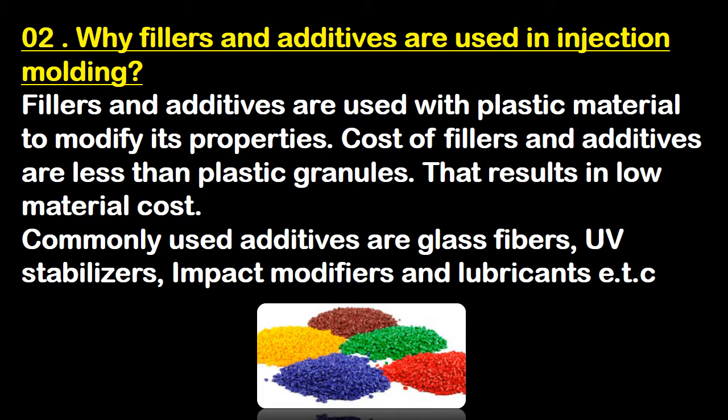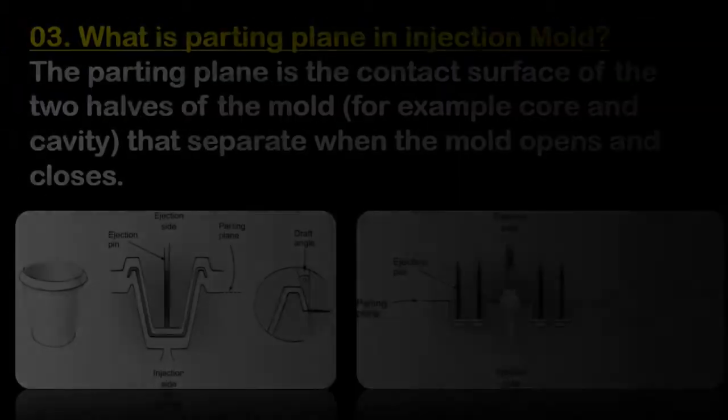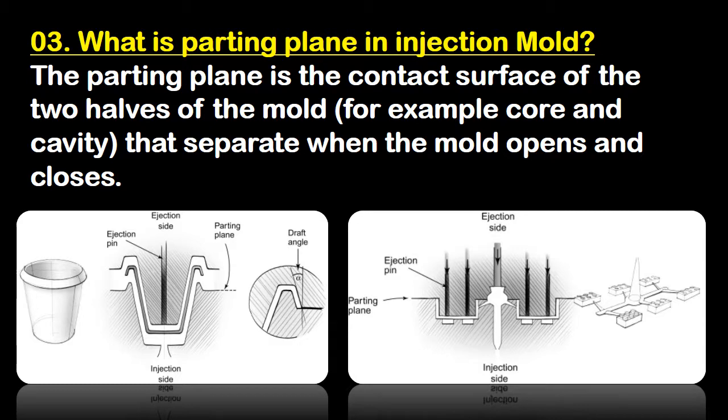Why are fillers and additives used in injection molding? Fillers and additives are used with plastic material to modify its properties. The cost of fillers and additives is less than plastic granules, resulting in lower material cost. Commonly used additives are glass fiber, UV stabilizer, impact modifier, and lubricant.